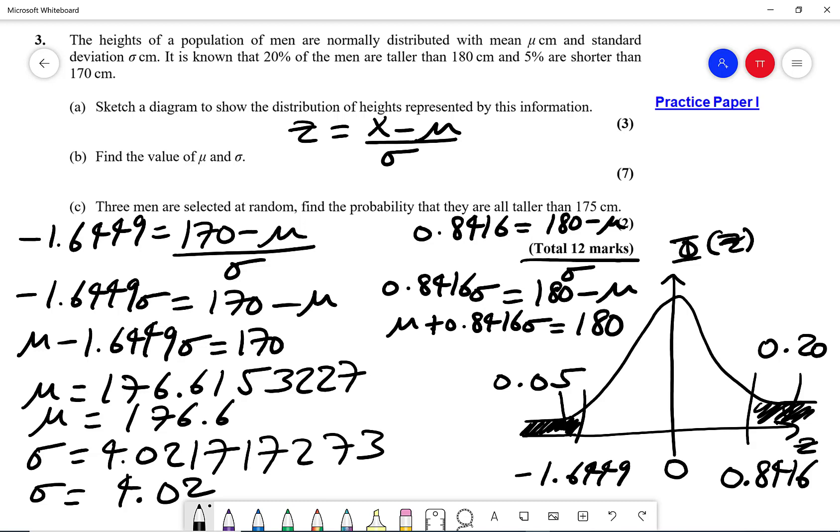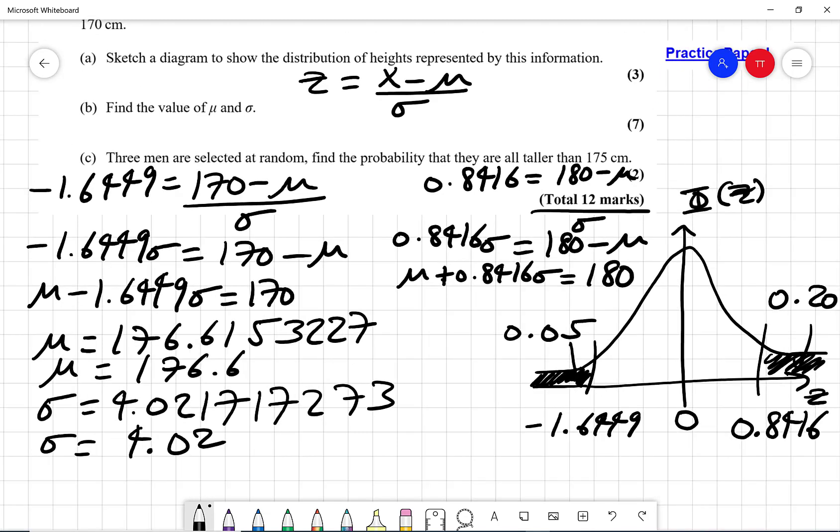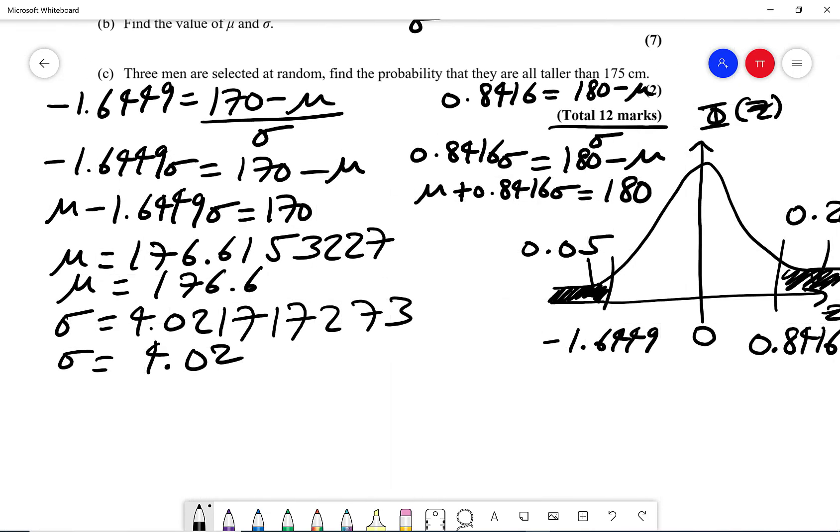So now that I've found mu and sigma, we've done part b. Now for part c it says three men are selected at random. Find the probability that they are all taller than 175 centimeters. So what we do is we say right, so we want the probability for part c that the man chosen is greater than 175, so we can get that from our calculator.